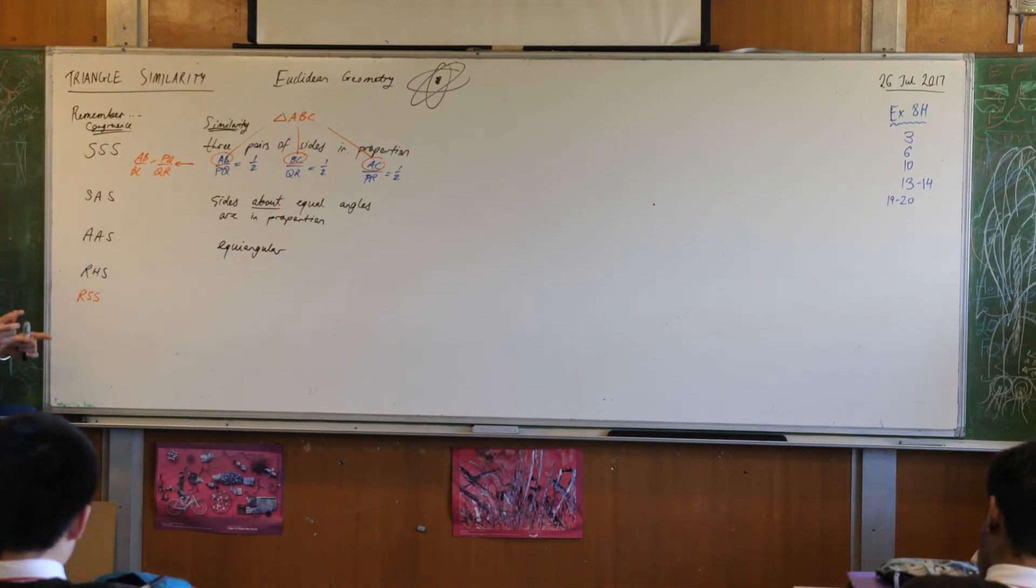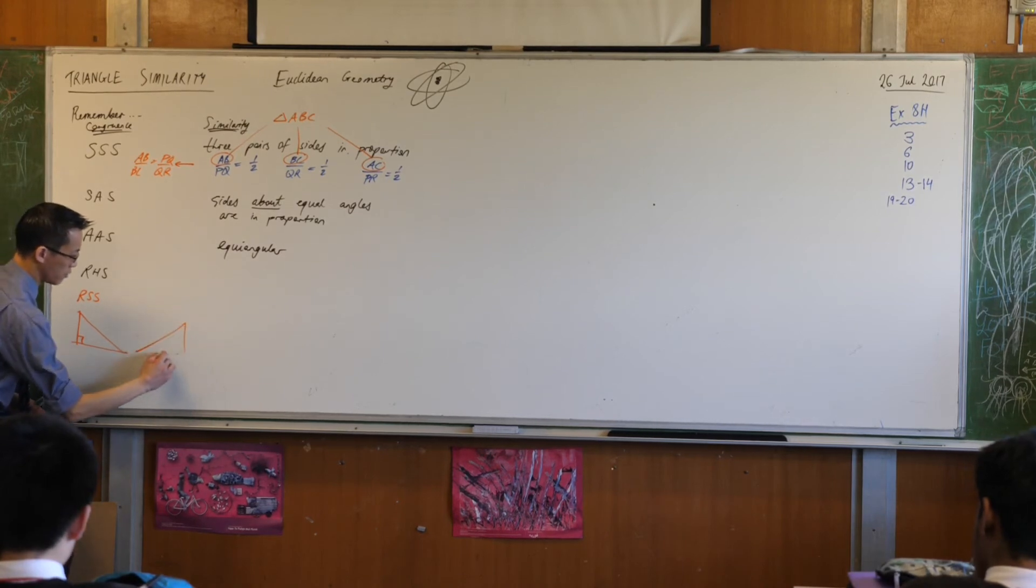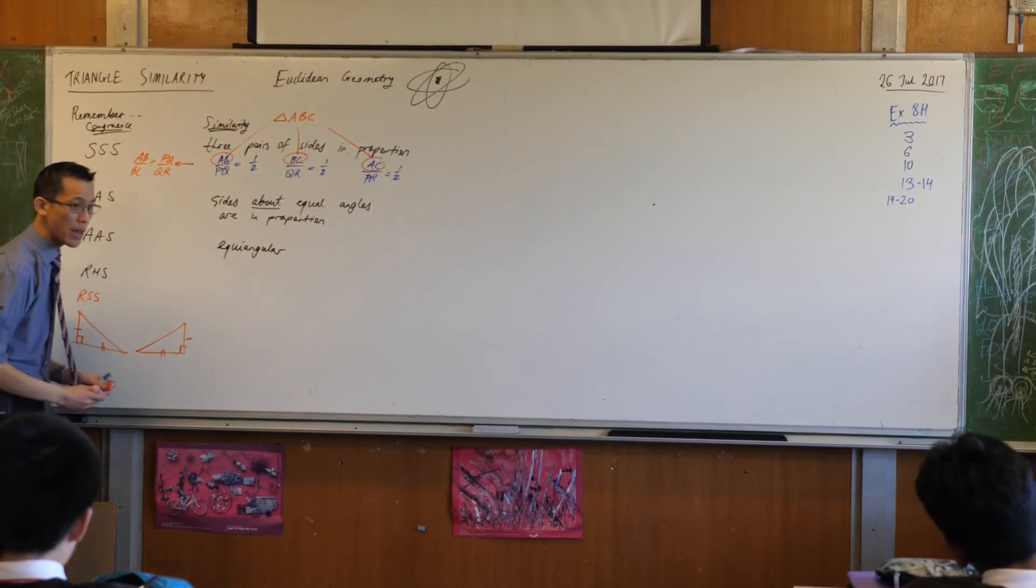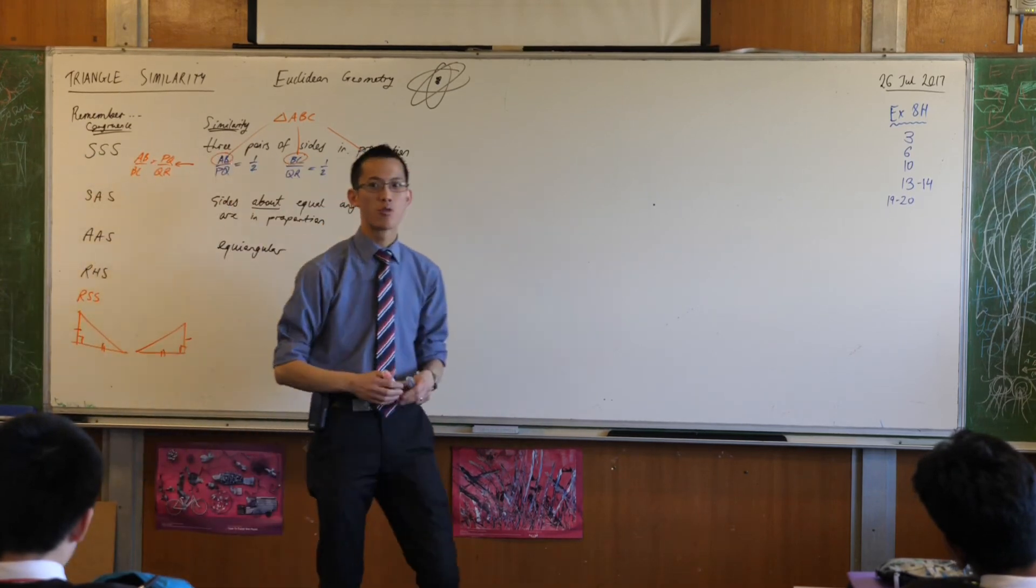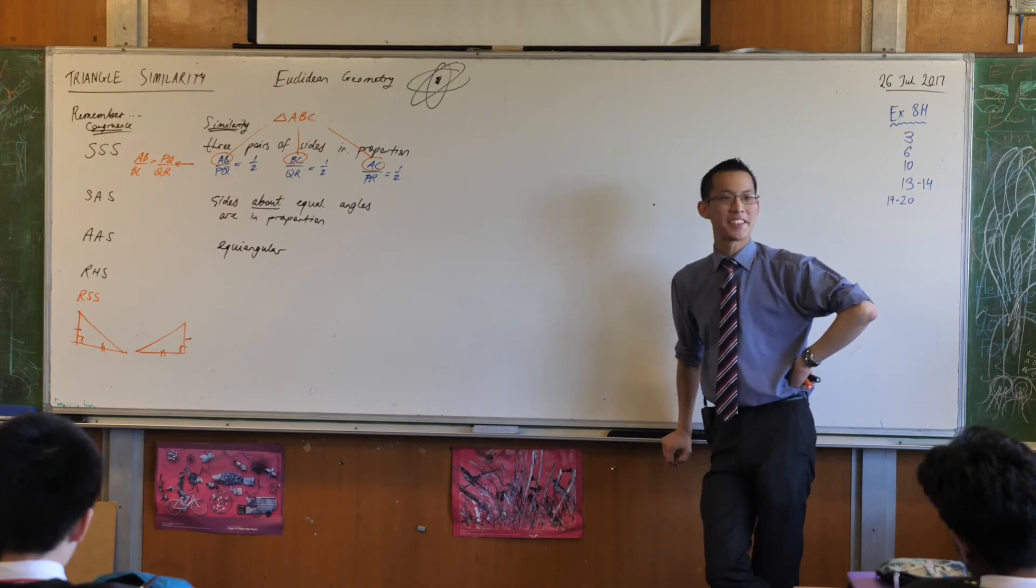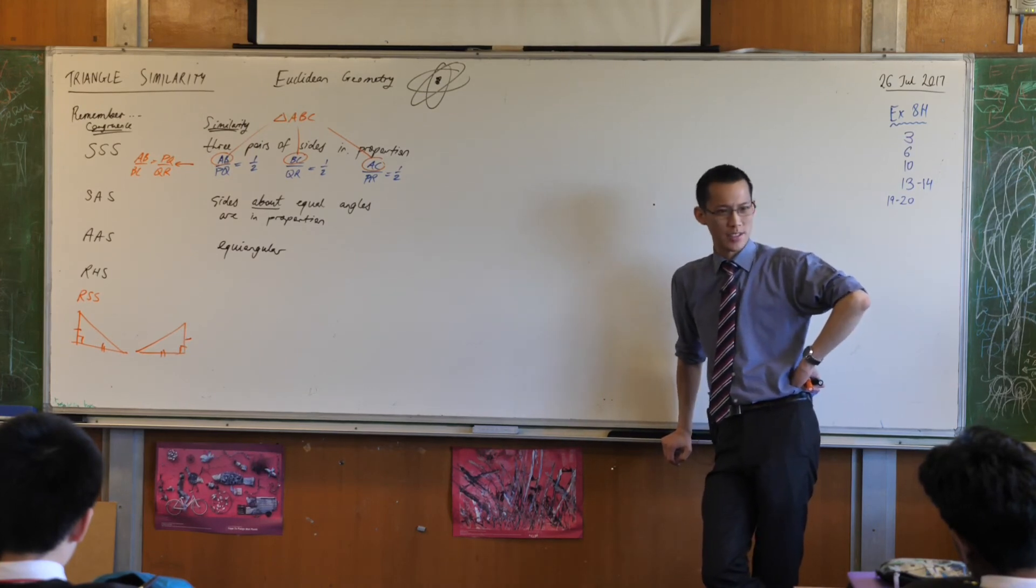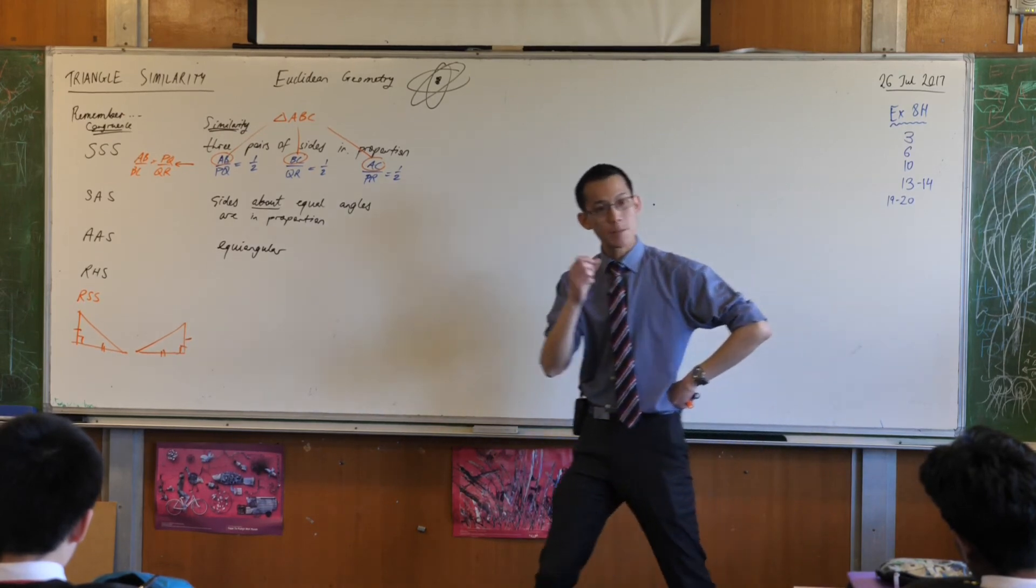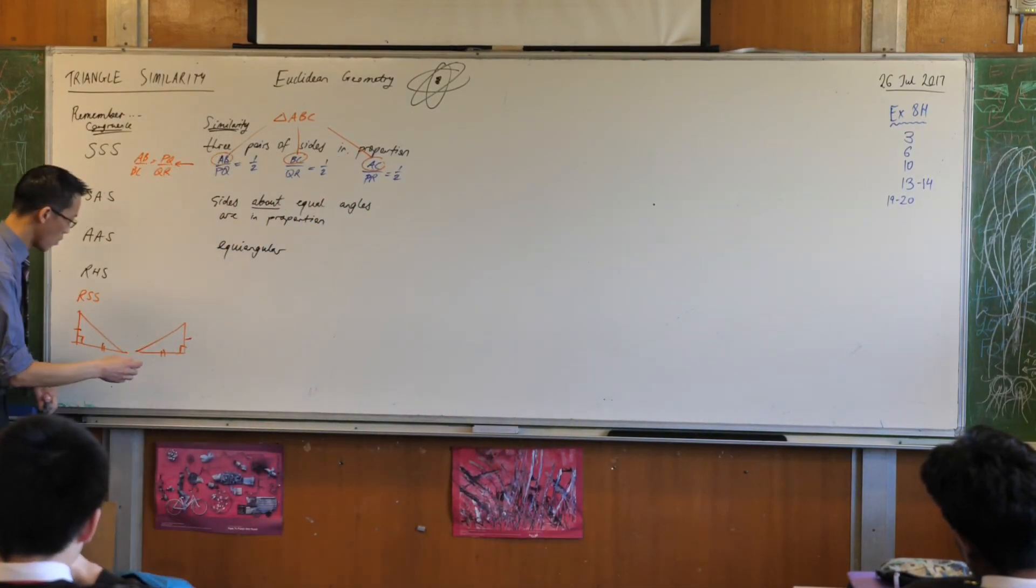But isn't that still true if you don't have the hypotenuse and you have two other sides? Like, here's the situation I'm looking at. And once I draw it, hopefully it will become clear. If I've got this triangle right-angled and this other triangle that's right-angled, and I have the two shorter sides and I know that they're equal, I'm thinking about congruence for a second. Okay. So here and here. Why is this not its own reason?